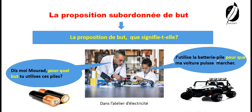La réponse : j'utilise la batterie pile pour que ma voiture puisse marcher. Mourad répond : j'utilise la batterie pile pour que ma voiture puisse marcher. Mourad a un but dans sa tête. Le but, c'est faire marcher la voiture. Et pour que la voiture marche, il doit utiliser ses batteries piles. Alors, on dit que Mourad exprime le but.